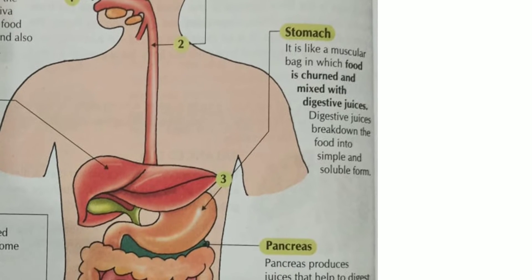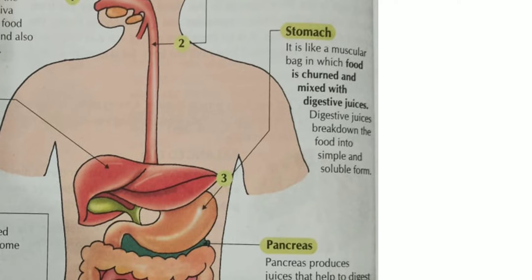The third part is the stomach. The stomach is a muscular J-shaped bag. In the stomach, digestive juices are produced. These juices mix with the food and break it down into a simpler and soluble form. It takes about 2 to 3 hours for our stomach to churn the food and mix it with juices until the food is converted into a soluble form.